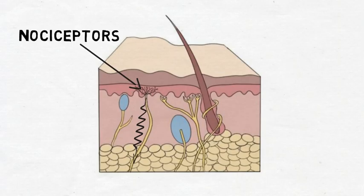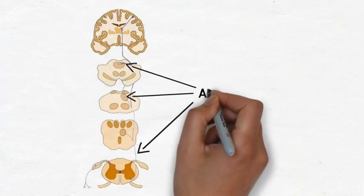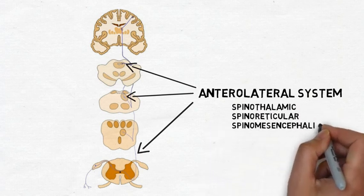The signal will be sent to the brain on pathways that make up what is known as the anterolateral system. The anterolateral system consists of three major pathways: the spinothalamic, spinoreticular, and spinomesencephalic tracts.